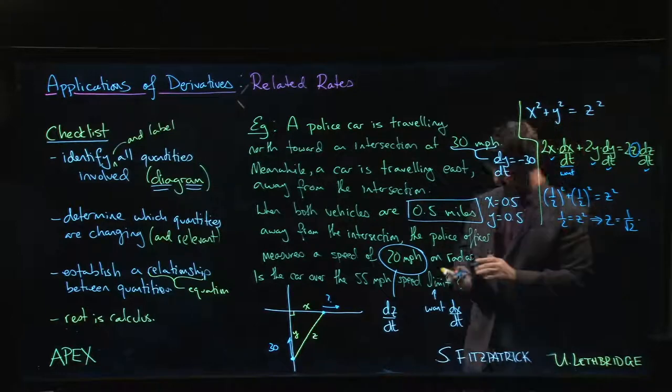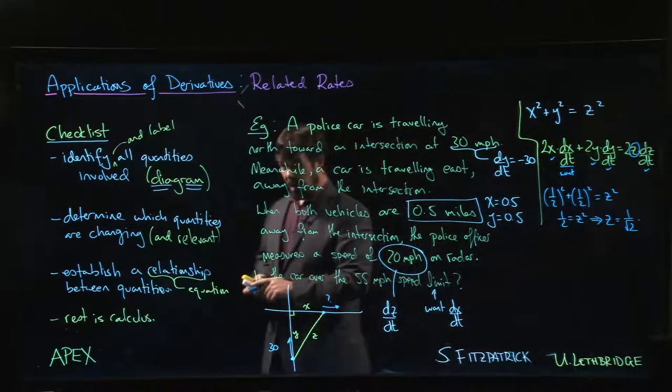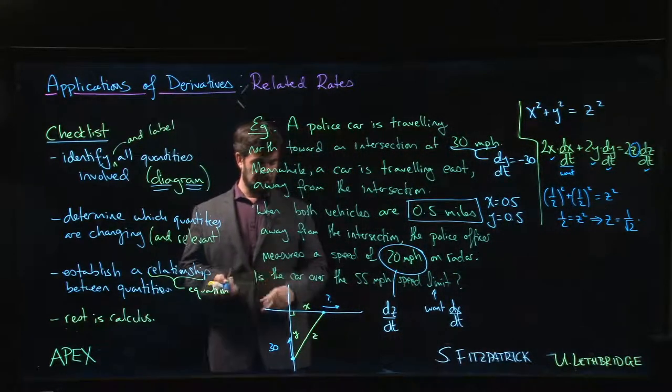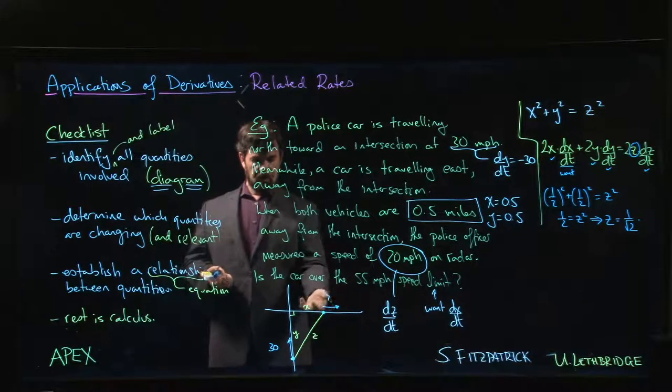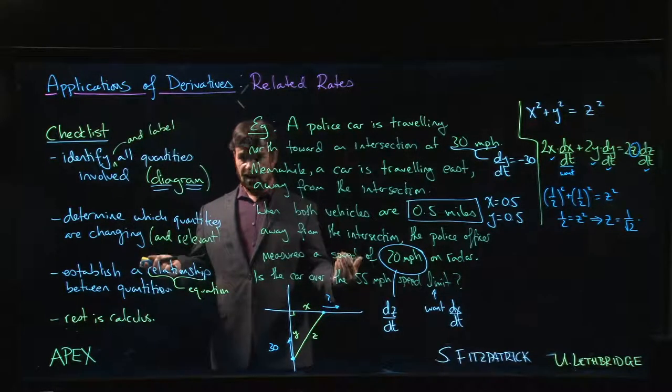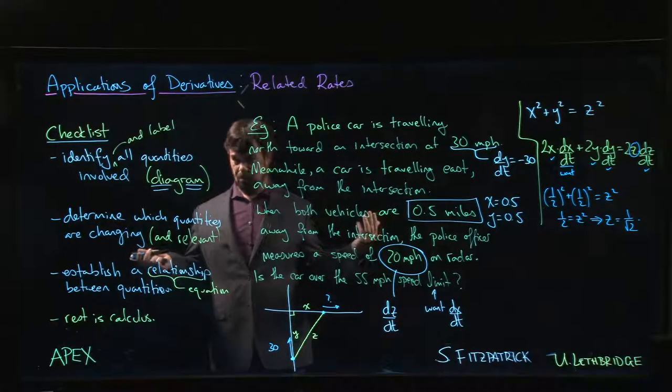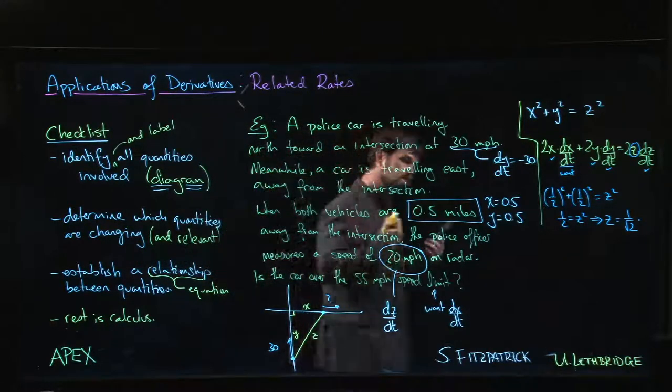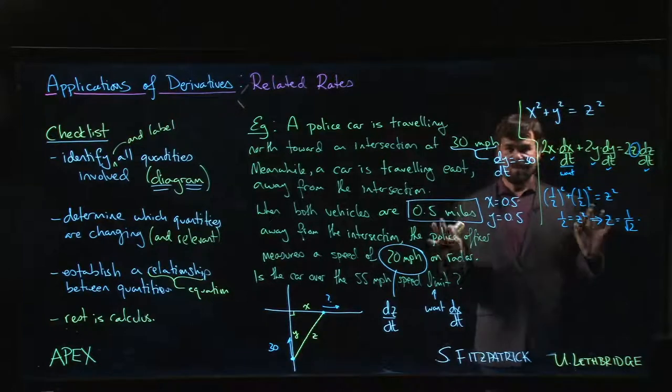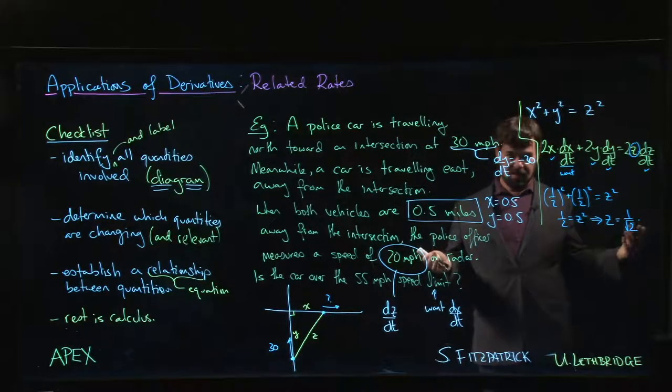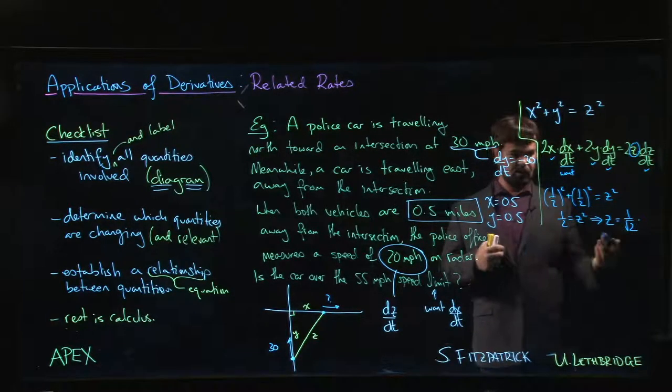It's one other problem with this example: how's the police officer going to know that the car was exactly half a mile away from the intersection? I don't know, maybe there's a mile marker there. It's not a realistic problem, but it does let us flex our calculus muscles and figure out what's going on.